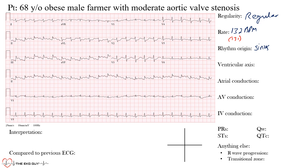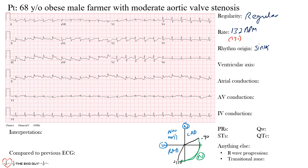Here at Mayo we use negative 30 degrees to positive 110 degrees as normal ventricular axis. Left axis deviation is beyond negative 30 degrees, right axis deviation is beyond positive 110 degrees, and a northwest axis is up above. Not many things reside in that northwest territory, though ventricular tachycardia can appear there.